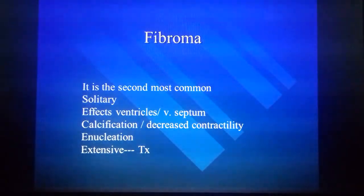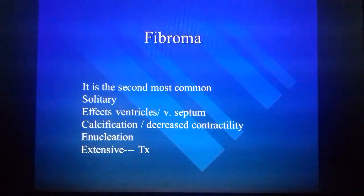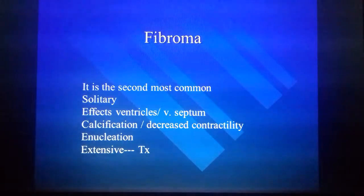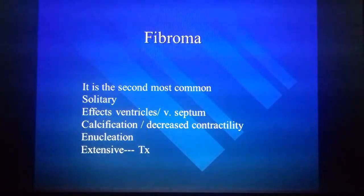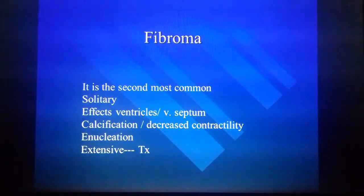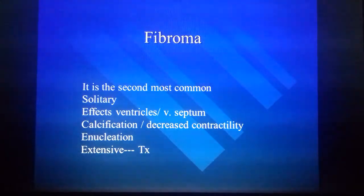Fibroma is the second most common cardiac tumor in children. It is usually solitary and affects the ventricle and ventricular septum. Calcification is associated, which could lead to decreased contractility. They can be enucleated, and if extensive, transplantation is needed.